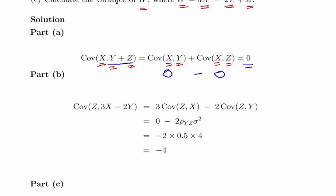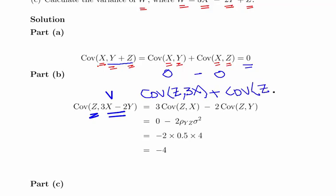Moving on to the second part: the covariance of z and v, where v equals 3x minus 2y. Again, we split it up — the covariance of z and 3x, plus the covariance of z and minus 2y. We can take out the constants 3 and 2. Since the covariance of z and x is 0, that first term is 0. So essentially we need to figure out minus 2 times the covariance of z and y.